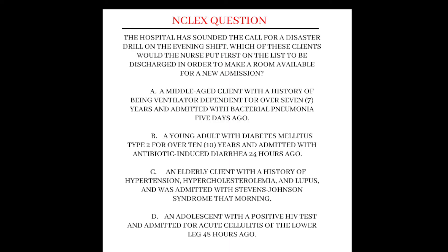The hospital sounded the call for a disaster drill on the evening shift. Which of these clients would the nurse put first on the list to be discharged in order to make a room available for a new admission? A: A middle-aged client with a history of being ventilator-dependent for over 7 years and admitted with bacterial pneumonia 5 days ago. B: A young adult with diabetes mellitus type 2 for over 10 years and admitted with antibiotic-induced diarrhea 24 hours ago. C: An elderly client with a history of hypertension, hypercholesterolemia, and lupus, admitted with Stevens-Johnson syndrome that morning. D: An adolescent with a positive HIV test and admitted for acute cellulitis of the lower leg 48 hours ago.